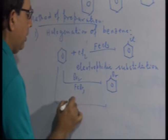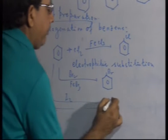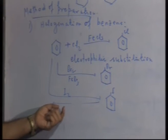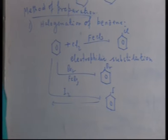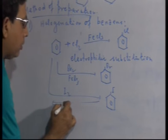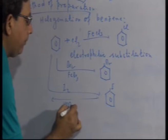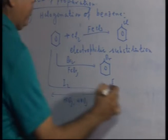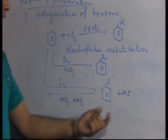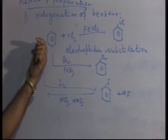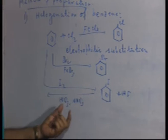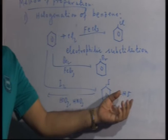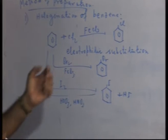For iodobenzene preparation, the reaction is reversible in nature. In order to prevent the back reaction, we add an oxidizing agent. That oxidizing agent oxidizes HI to iodine, thus preventing the back reaction.